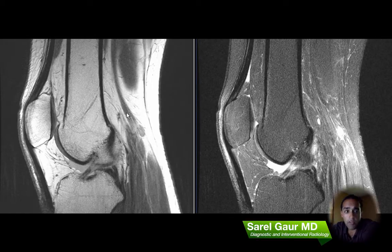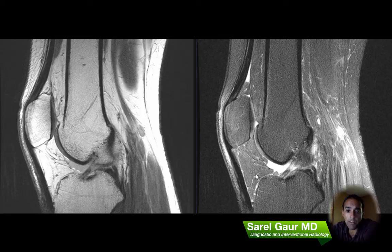Here I have the sagittal set of images. I've got a proton density set of images here on the left — these are proton density weighted — and I have a T2 weighted set of images here on the right with fat suppression.